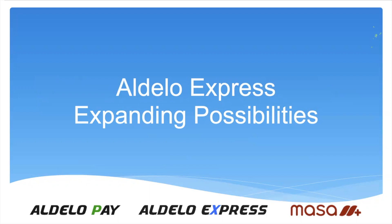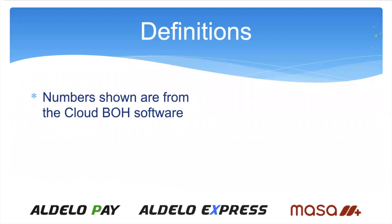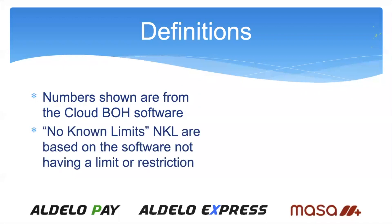Let's look at some of the definitions we're going to talk about today. The numbers shown are from the cloud back office software. We're going to look at something I'm calling 'no known limits' — NKL. You'll see that throughout the presentation. These are based on the software not having a specific limit in mind, whereas some aspects have a specified amount or quantity. But the vast majority of what this software will do has no limits.